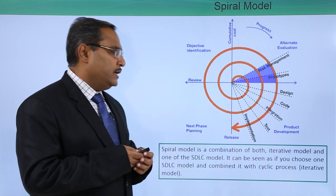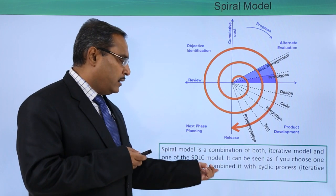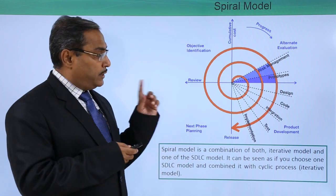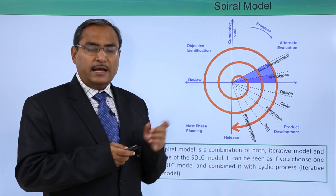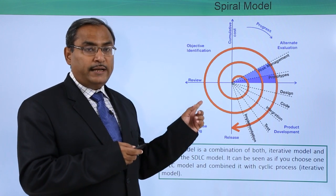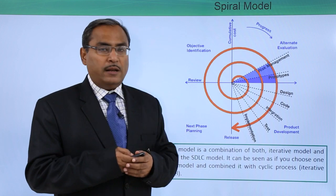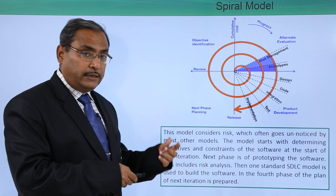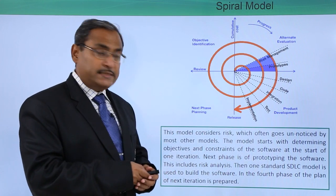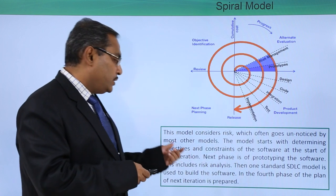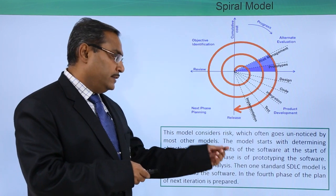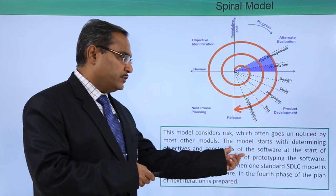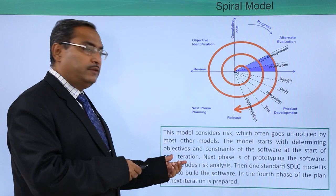You can see it as: choose one SDLC model and combine it with a cyclic process, that is the iterative model. These two models are combined to give the shape of the SPIRAL model. This model considers risk, which often goes unnoticed by most other models. The model starts with determining the objectives and the constraints of the software at the start of each iteration.